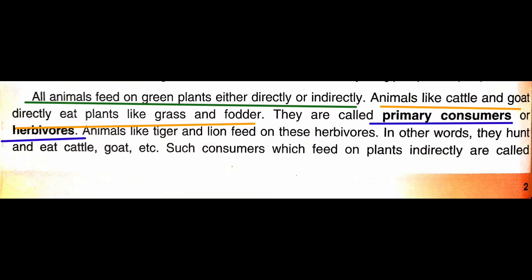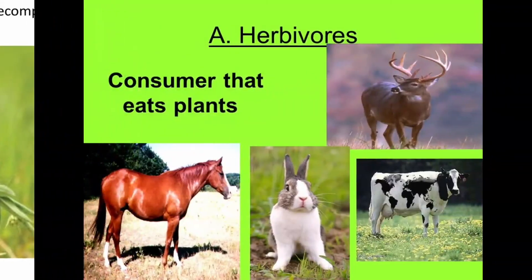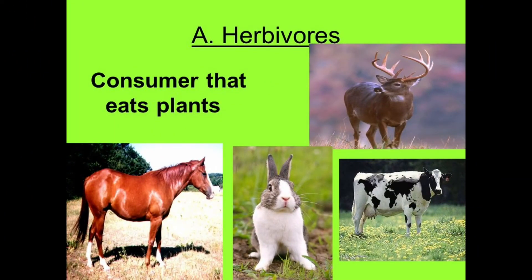All animals feed on green plants either directly or indirectly. Animals like cattle and goat directly eat plants like grass and fodder. They are called primary consumers or herbivores. Iska matlab hua jo primary consumers hain ya herbivores hain, woh directly plants ko khaa lenge — jaise leaves — ya phir unki products pe depend karenge jaise fruits, nuts. Consumer that eats plants and their products — those are called herbivores.